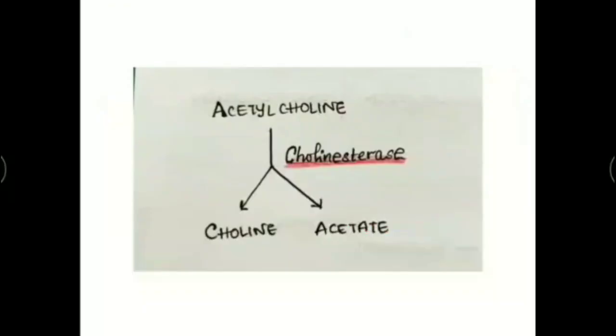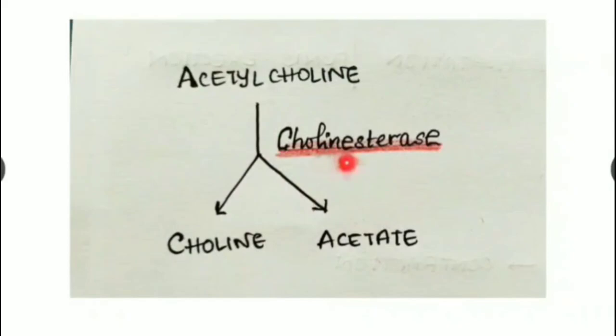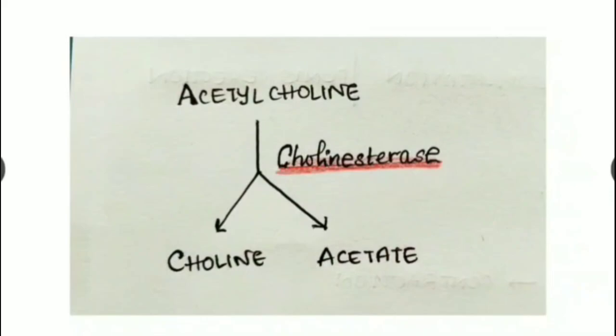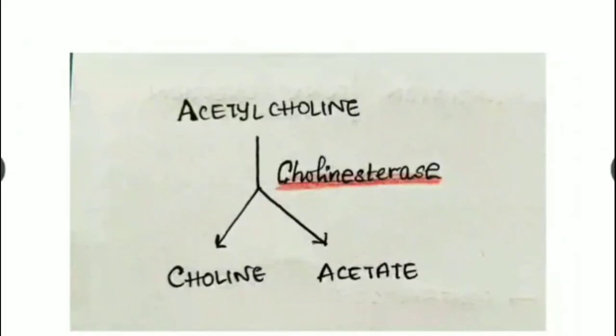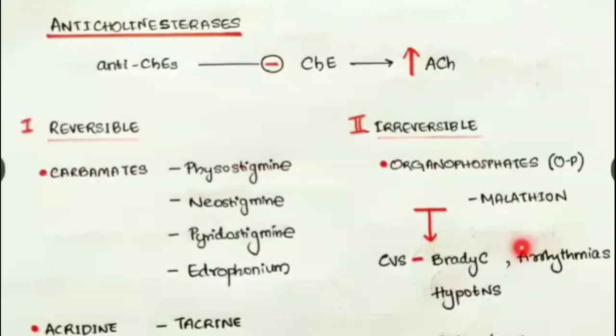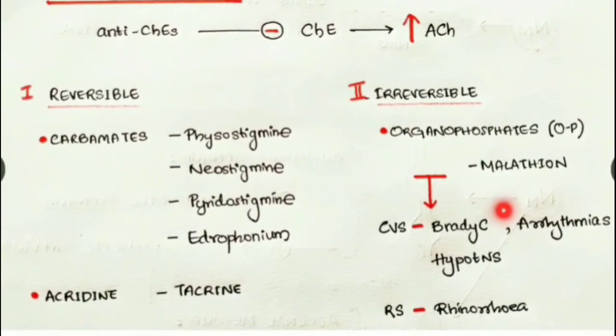Anticholinesterases inhibit the cholinesterase enzyme, which would normally break down acetylcholine into choline and acetate. By inhibiting this enzyme, anticholinesterases inhibit the breakdown of acetylcholine and hence increase the acetylcholine concentration.